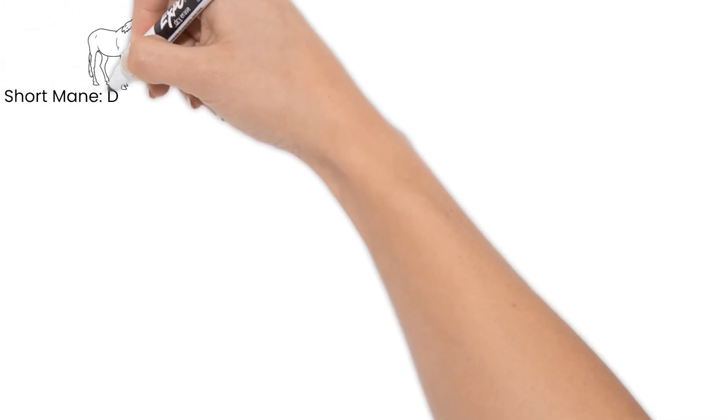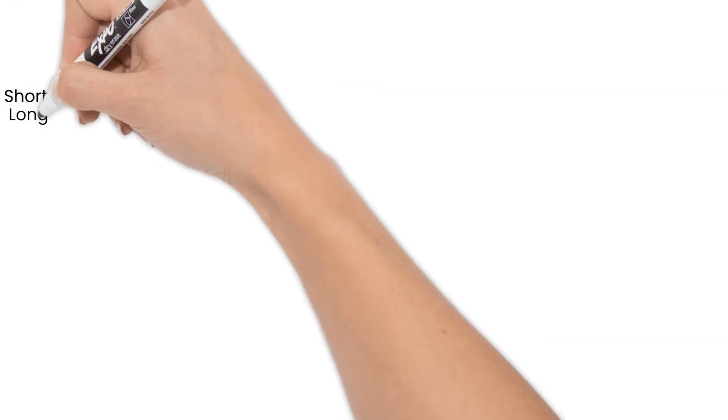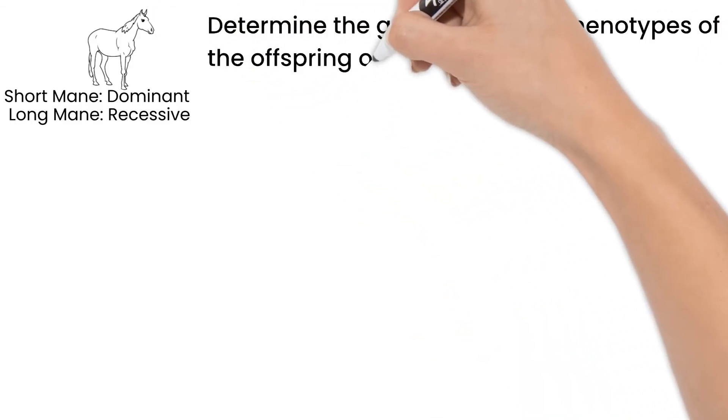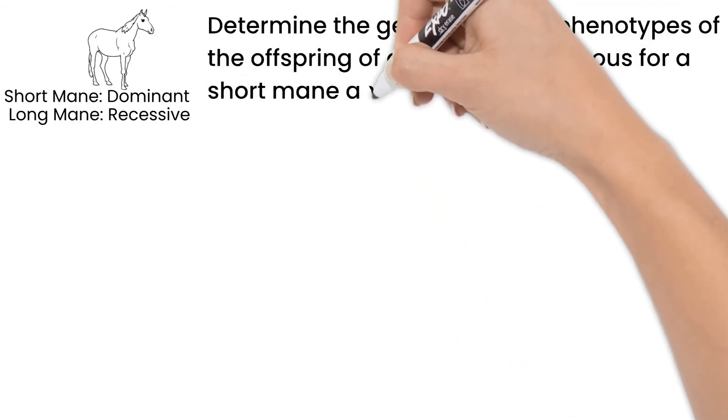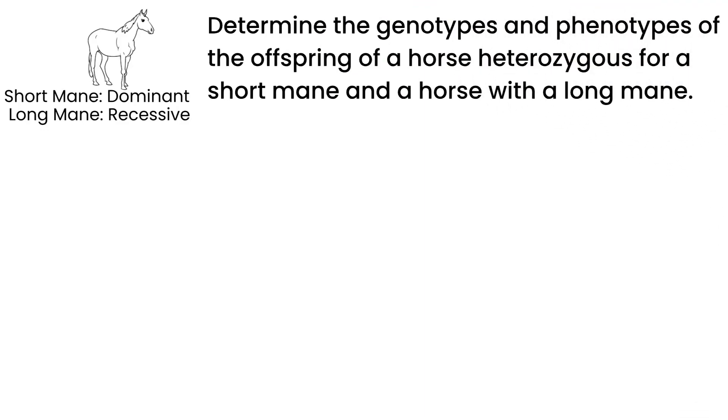We'll look at one last example. On a horse, short mane length is a dominant trait, where a long mane is recessive. Determine the genotype and phenotype of the offspring of a horse heterozygous for a short mane and a horse with a long mane.